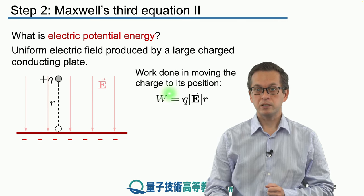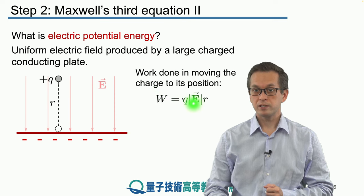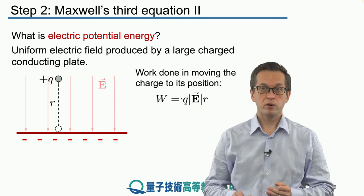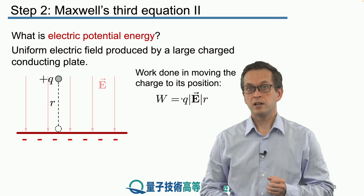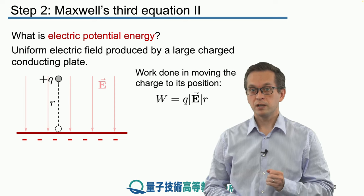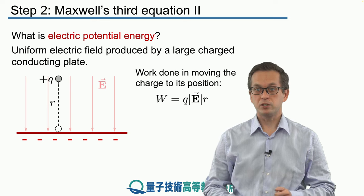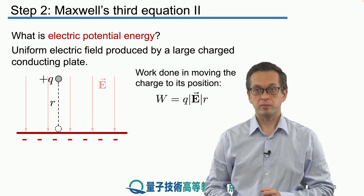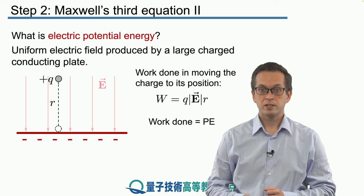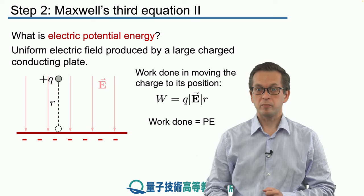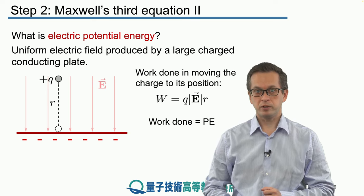And we know that this work is just given by the force times the distance. Force, in this case, is just the magnitude of the charge times the magnitude of the field, and then times r, which is the distance away from the charged magnetic plate. So we see that the work done is, again, the potential energy, the electric potential energy.